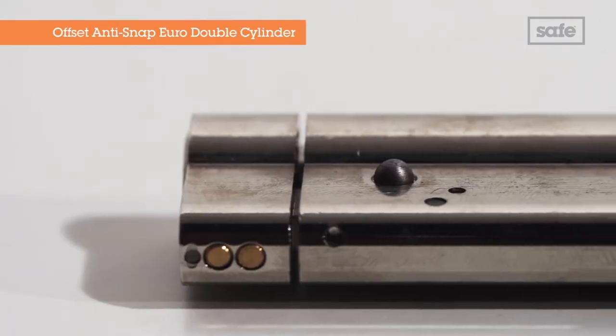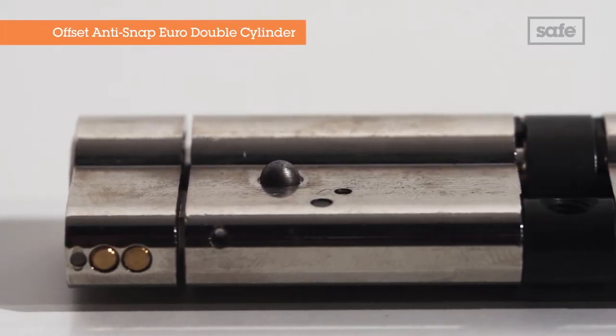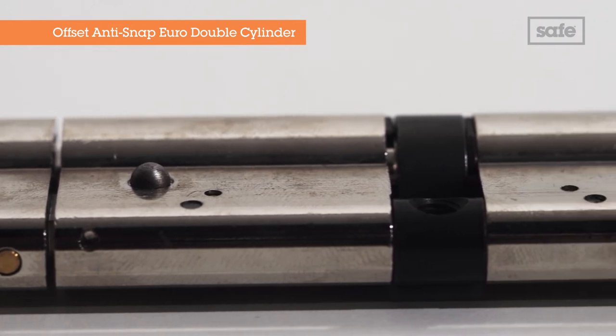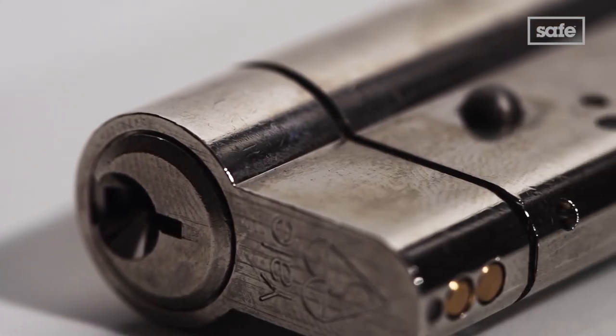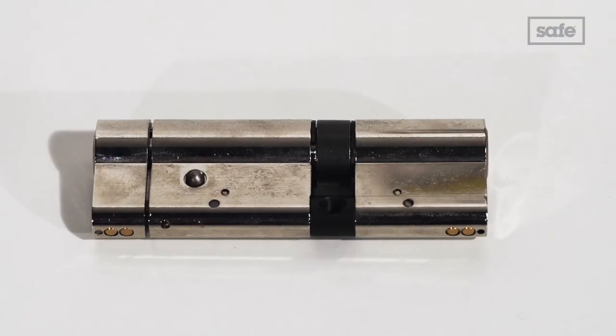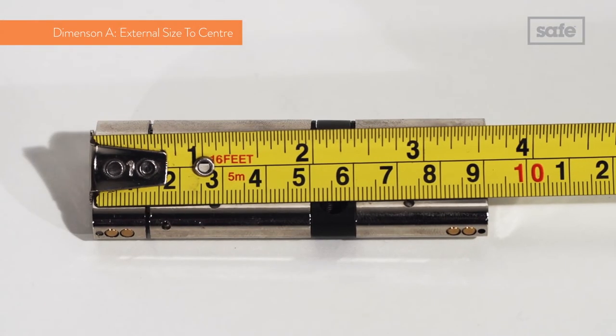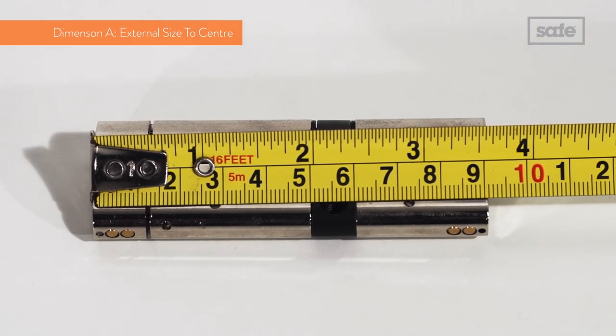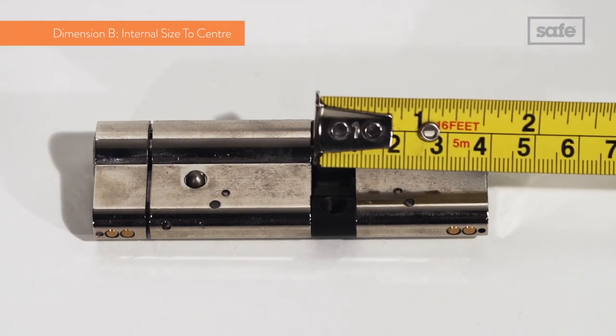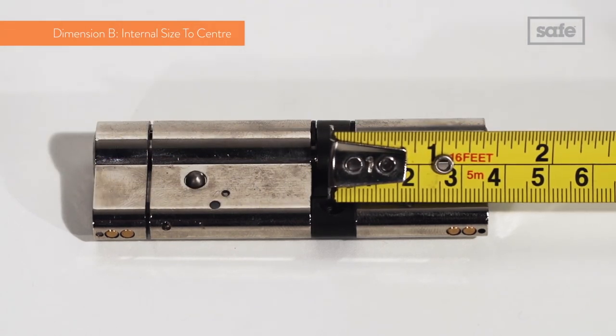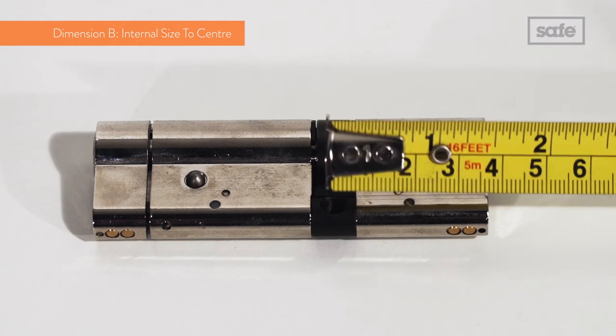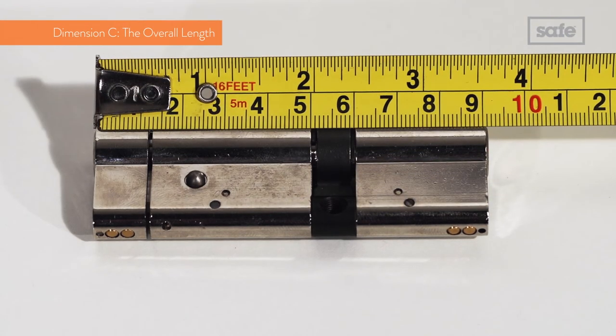Our next example is an offset anti-snap Euro double cylinder. Offset cylinders like this are most commonly used with UPVC doors. The measurements in this case will be A55, B35 and C90.